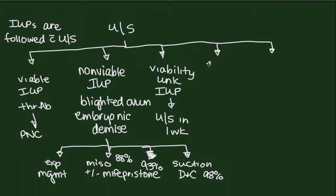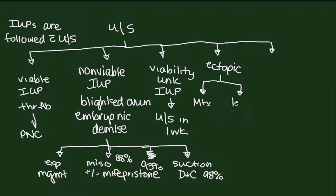The other diagnostic category is ectopic pregnancy. Patients who definitively have an ectopic pregnancy on pelvic ultrasound will typically end up with one of two treatment options: either methotrexate for appropriate candidates, or laparoscopy with some form of tubal surgery — either salpingostomy or salpingectomy.